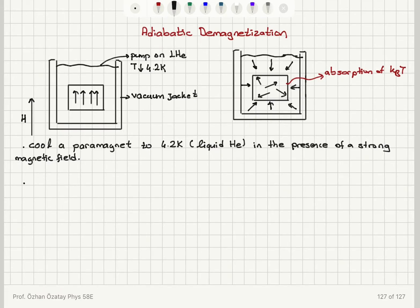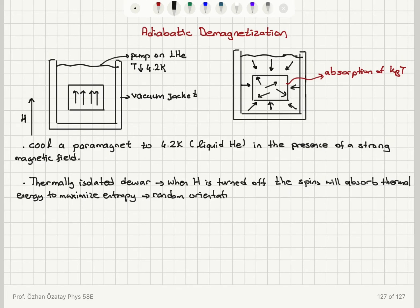So a thermally isolated paramagnet, it's inside a dewar which is thermally isolated. When H is turned off, the paramagnetic moments or the spins will absorb thermal energy to maximize entropy, basically in order to get a random orientation of moments.